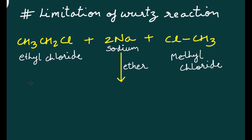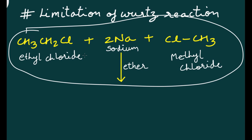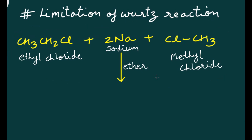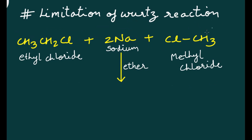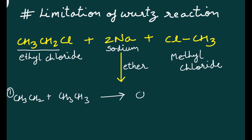Now, what will happen if you take different alkyl halides? For example, ethyl chloride and methyl chloride together. All these are present in the same solution. Sodium combines with the chlorine atoms to form sodium chloride. Since all the groups are present in the same solution, ethyl chloride can react with itself to give CH3CH2-CH2CH3, which is butane.